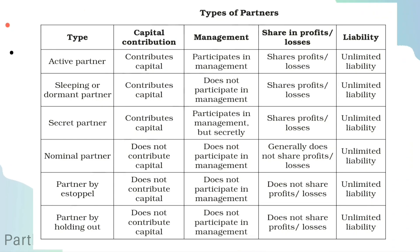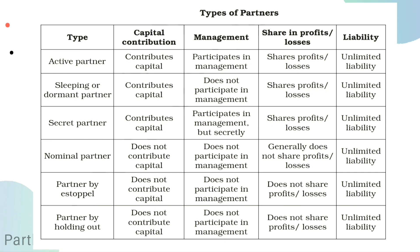Here is a comparison between different types of partners: active, sleeping, secret, nominal, partner by estoppel, and partner by holding out. The first three types of partners contribute capital, participate in management, share profits and losses, and have unlimited liability. But nominal partners, partner by estoppel, and partner by holding out do not contribute capital, do not participate in management, and do not share profit or losses — yet they still have unlimited liability.